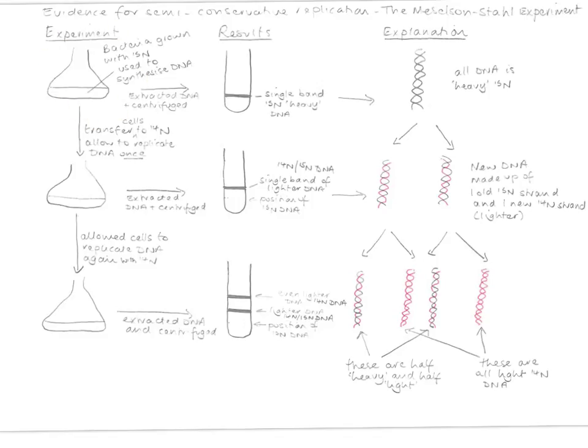They extracted the DNA and centrifuged it. This means they spun it very quickly. They saw a single band of DNA here representing the 15N or heavy DNA. As you can see here, that shows that it is a single band, all heavy DNA.